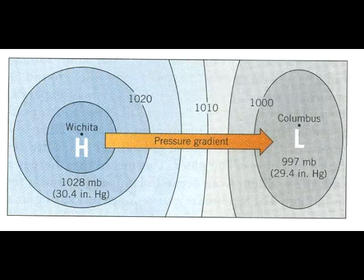The pressure gradient force is the cause of wind. It drives the wind directly from areas with higher barometric pressure to areas with lower atmospheric pressure. The pressure gradient force acts at right angles to the isobars. Steep pressure gradients cause high wind speeds.